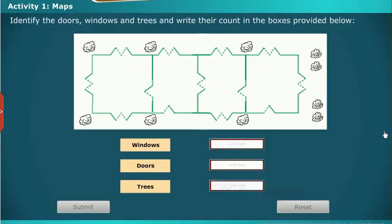Take up an activity. Identify the doors, windows and trees and write their count in the boxes provided below.